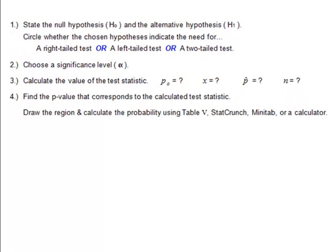Number four, we compute the P value that comes from the corresponding calculated test statistic in step three. Then we draw the region and we calculate the probability by using table 5, StatCrunch, Minitab, or a calculator.